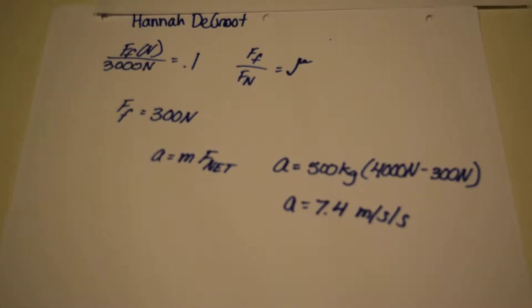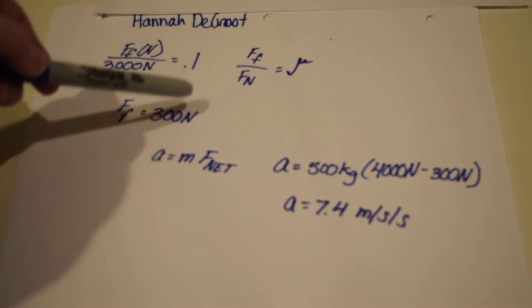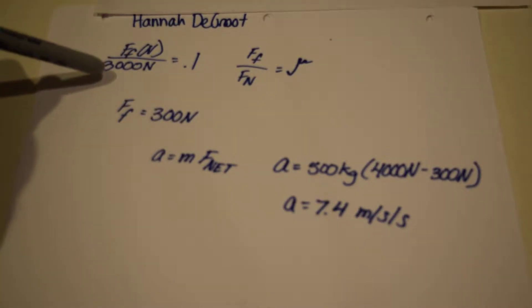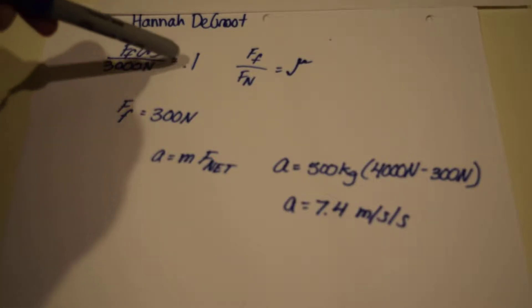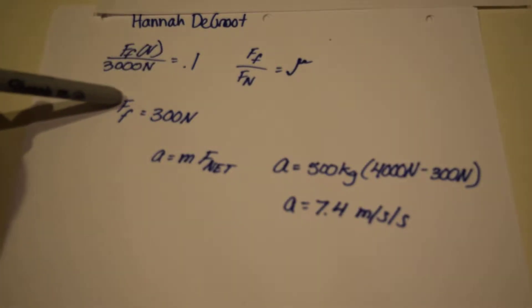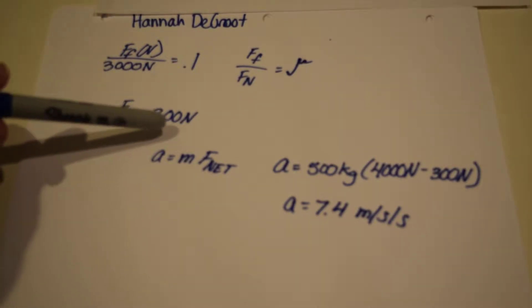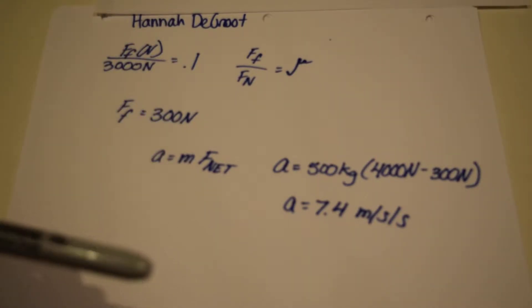So the coefficient of friction is found by the friction force over the normal force and so since we know the normal force and the coefficient of friction we can find the friction force in newtons. So once we solve this problem here multiplying 3,000 by 0.1 we get about 300 newtons.